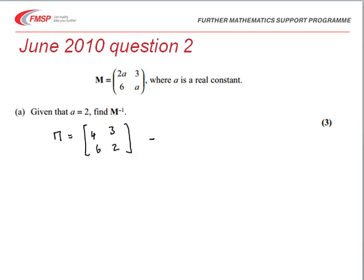So M inverse, well we need the determinant first of all, so let's work out the determinant of that separately of M. The determinant of M comes from multiplying the leading diagonal, 4 multiplied by 2.